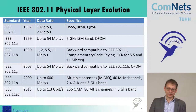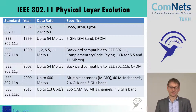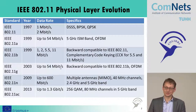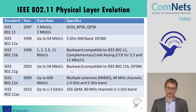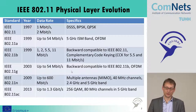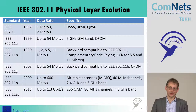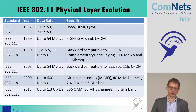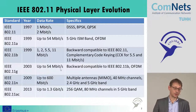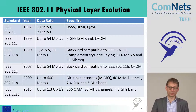A couple of years later, in 2003, the 802.11a OFDM interface was transferred from 5 GHz to 2.4 GHz, and we could also reach 54 megabit per second using the lower frequency band at 2.4 GHz.